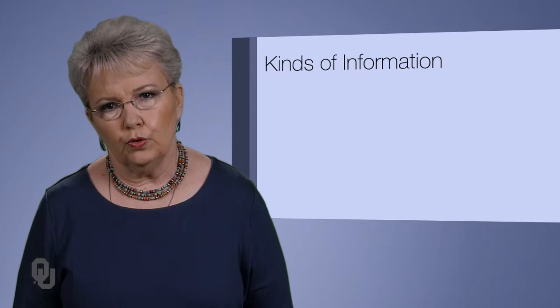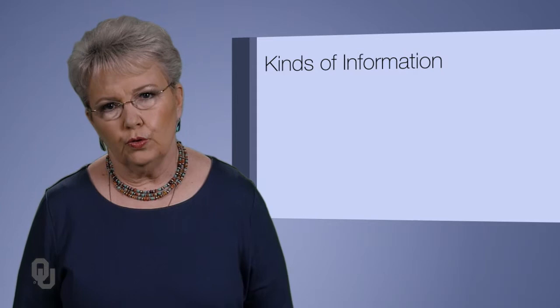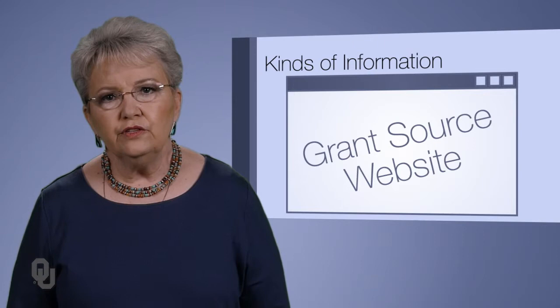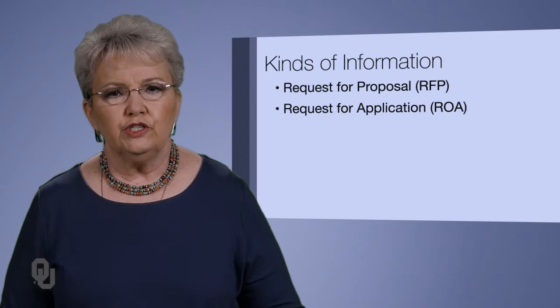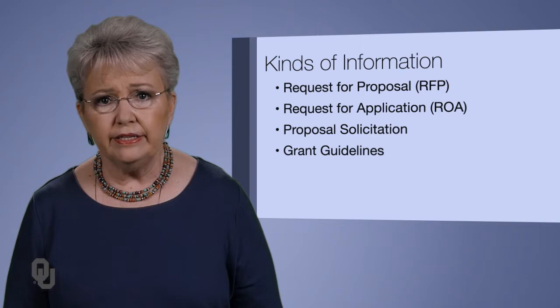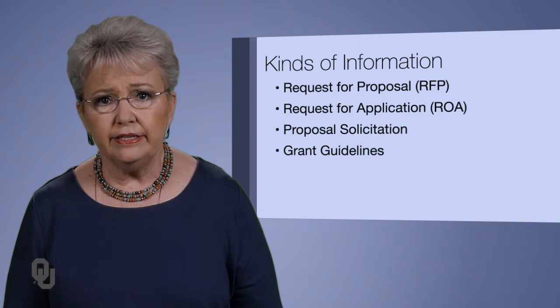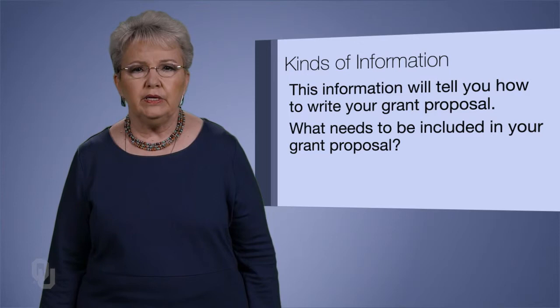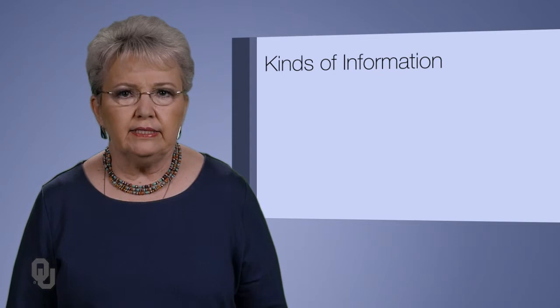When you have decided on a grant source and go to that grant source website, the kinds of information you should look for include a request for proposal — which could also be called a request for application, a proposal solicitation, grant guidelines, or grant proposal guidelines. Those documents will tell you how to write the grant proposal and what needs to be included.